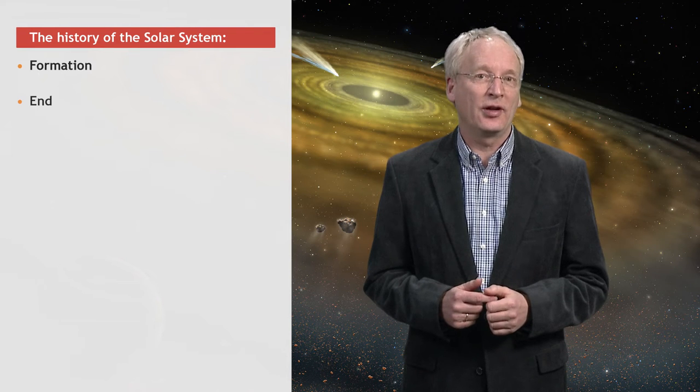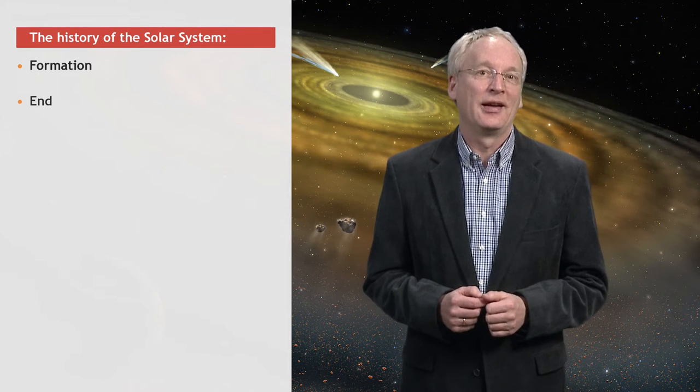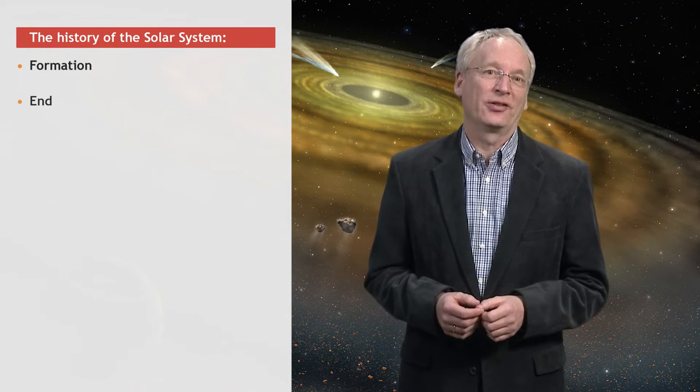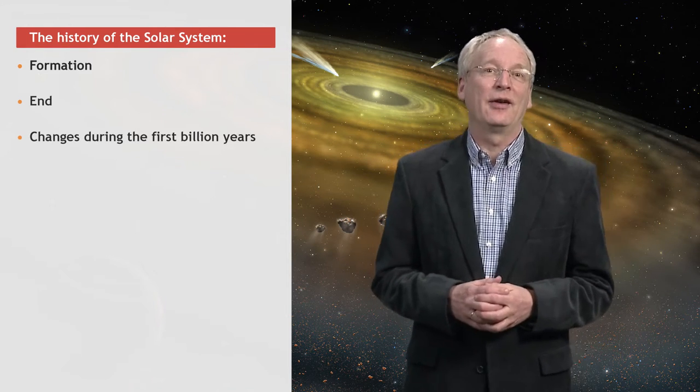And, as I will tell you today, the solar system is actually not as unchanging as we think. In particular, during the first billion years, it did change a lot. So there is a history after all.